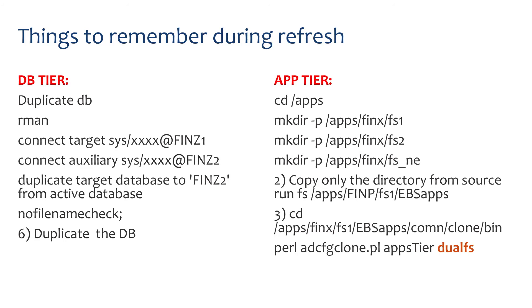The next tip is about refresh. It's a little different when you're refreshing a 12.1.3 application versus a 12.2.4, 12.2.5, or 12.2.6 application. Since there are different file systems — FS1, FS2, and FSNE — when cloning the application from production, make sure you use the term ADCFG clone dual FS. What dual FS does is it clones your FS1 to FS2 and handles all those things for you. This dual FS command started in 12.2.4, so it's a very important and helpful option to use.